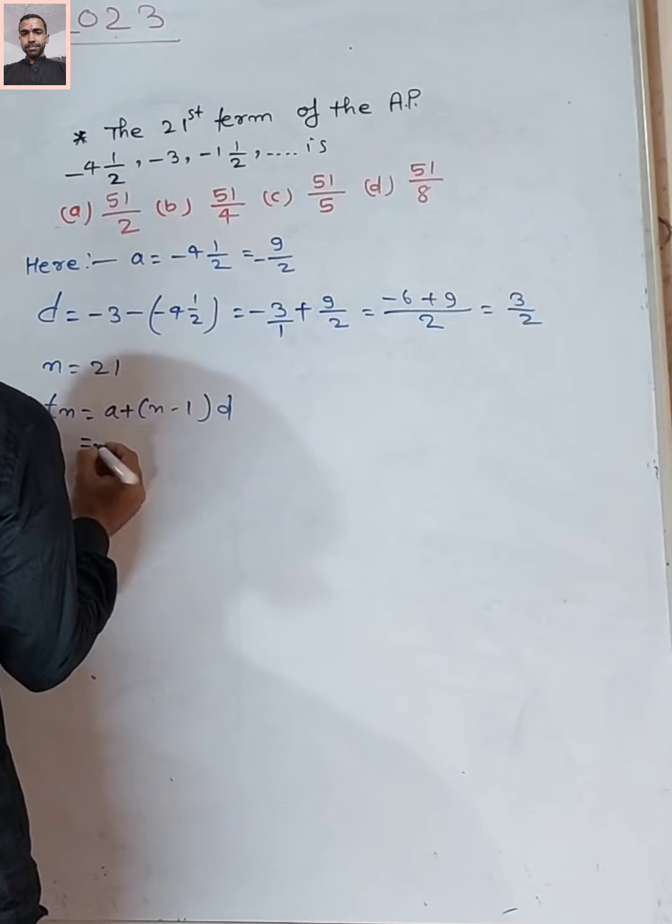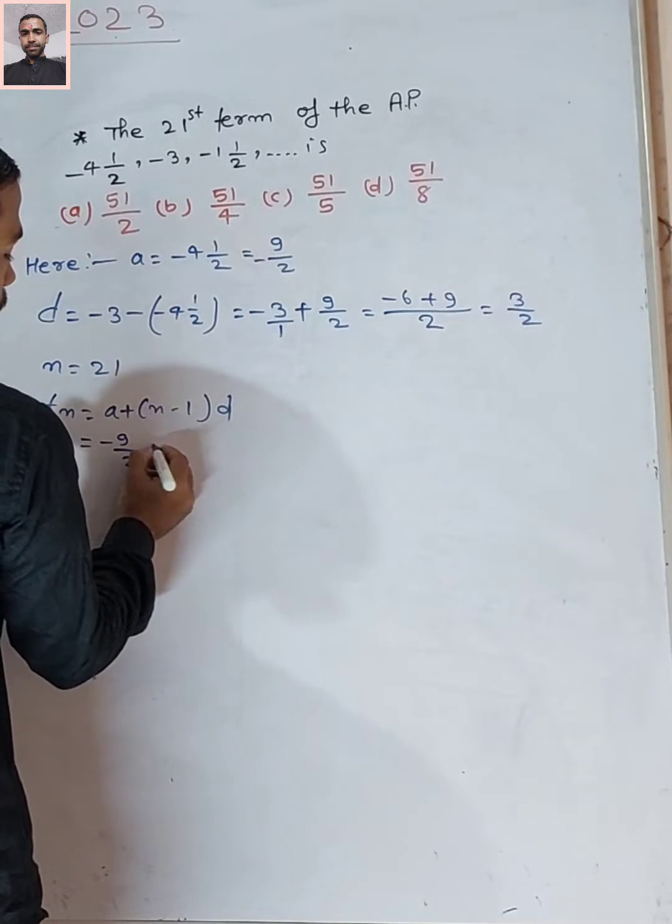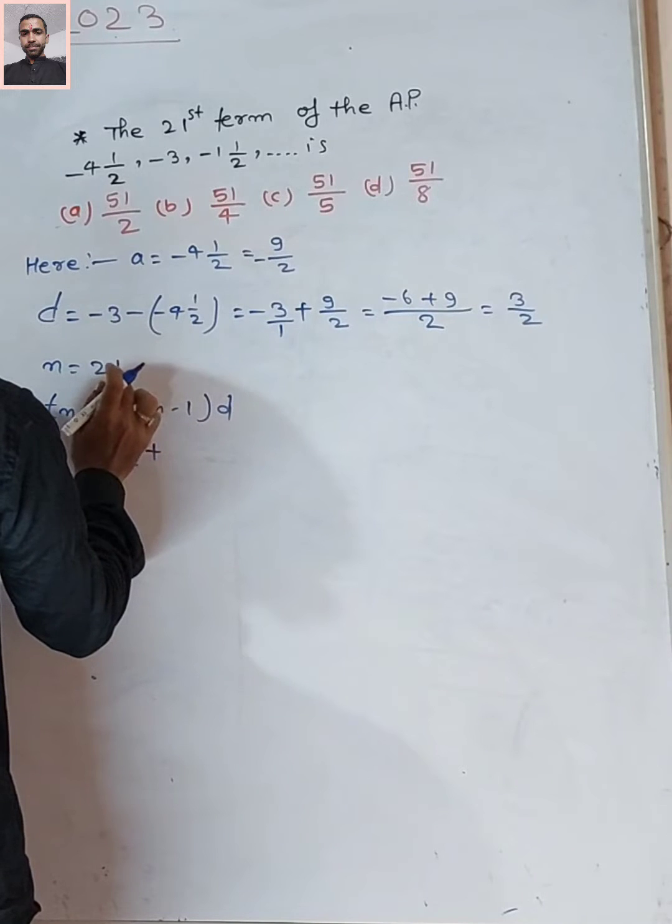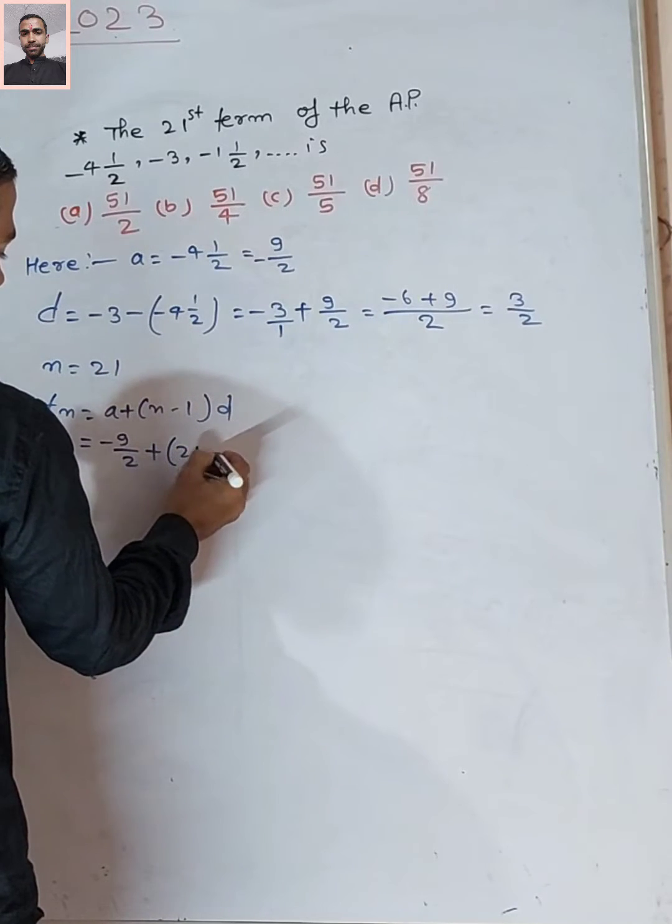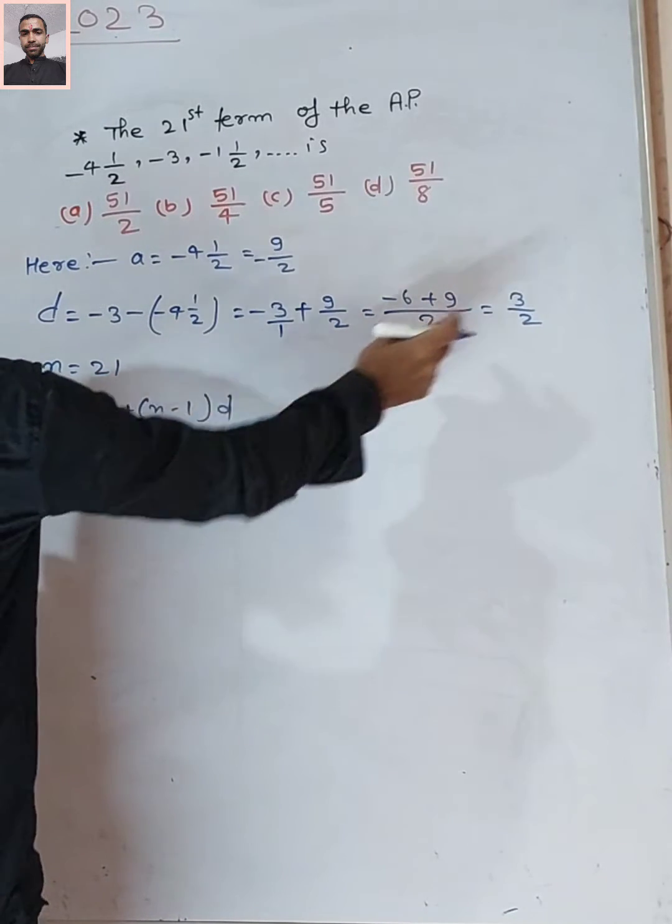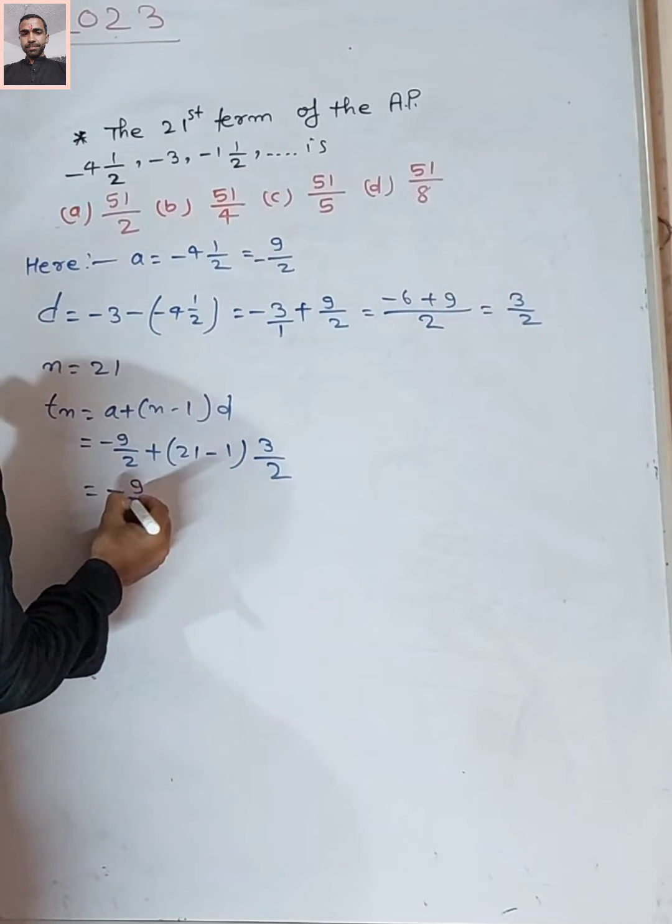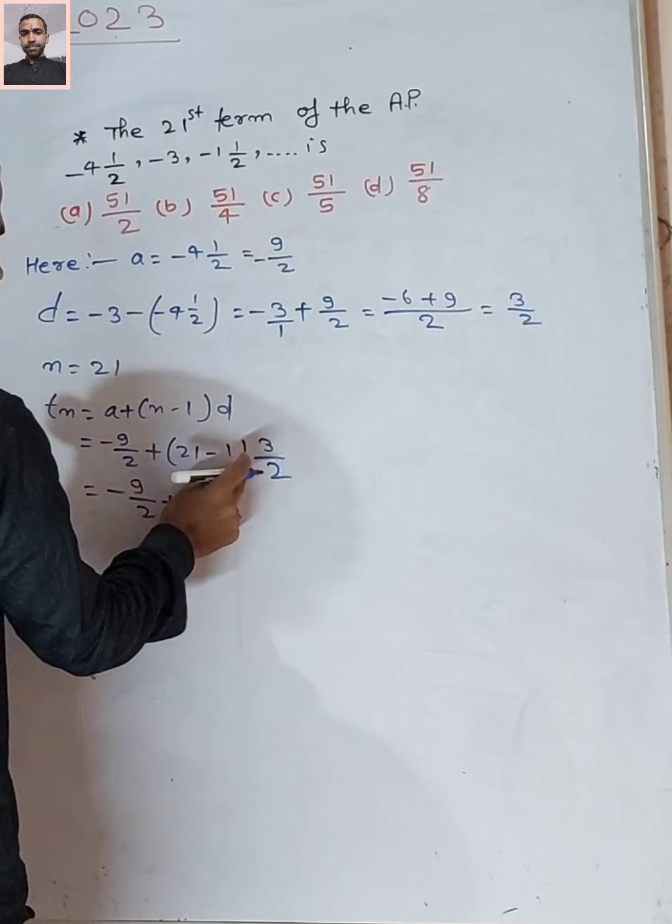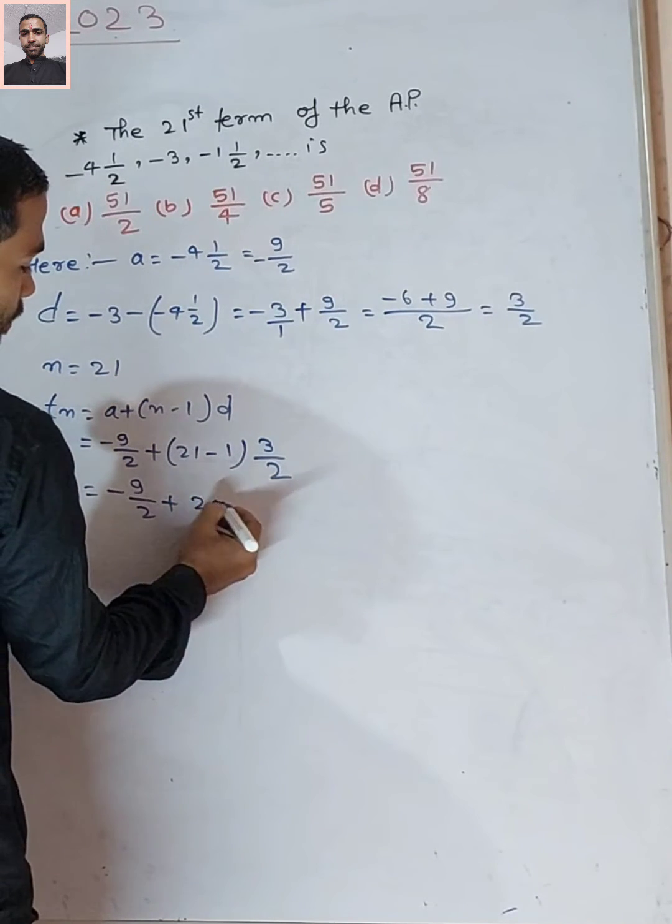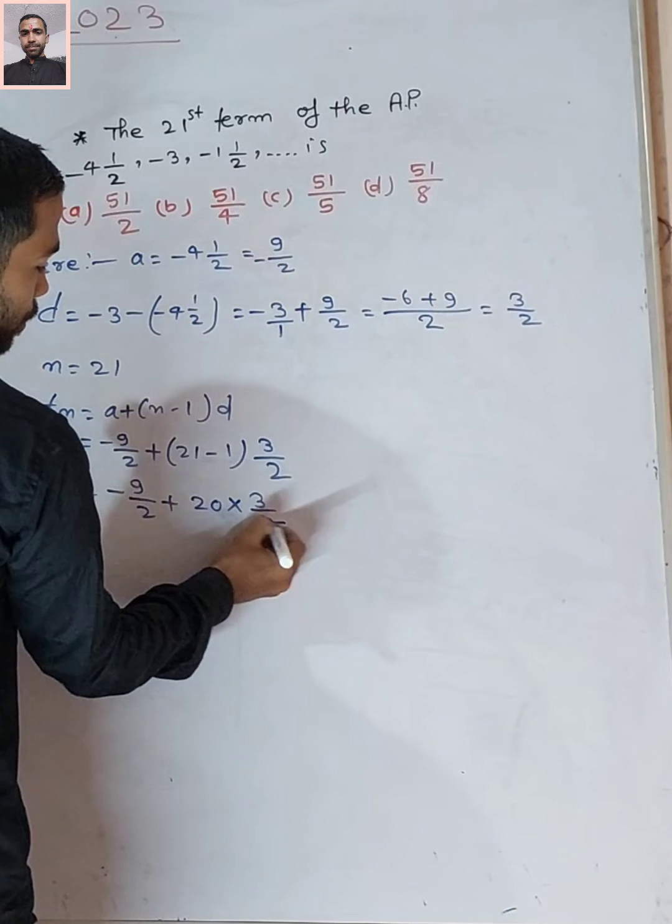Substituting: a = -9/2, plus n = 21 minus 1, times d = 3/2. So, -9/2 plus 20 multiplied by 3/2.